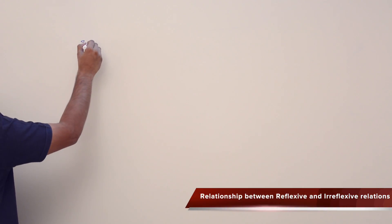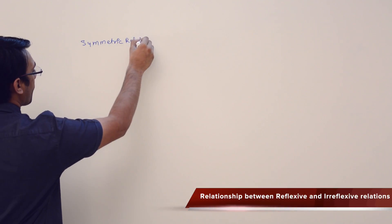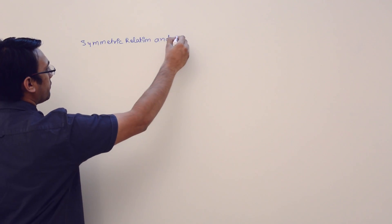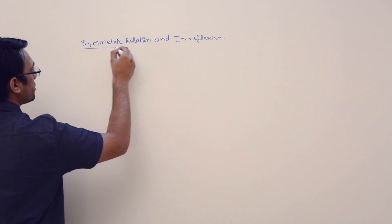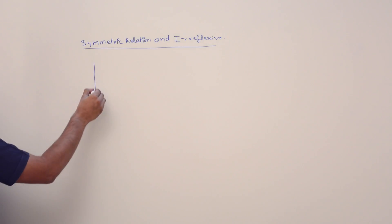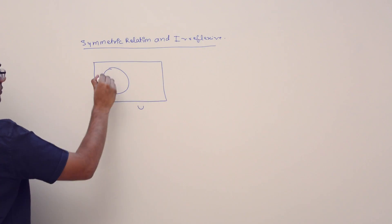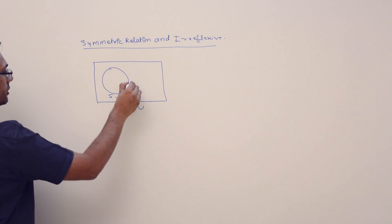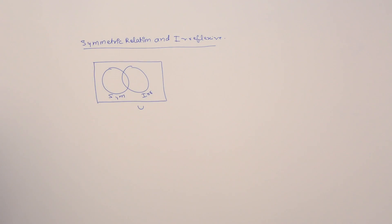Now let us look at the relationship between symmetric relations and irreflexive relations. Using this Venn diagram, we have a universal set, a set of relations which are symmetric, a set of relations which are irreflexive, and their intersection — symmetric and irreflexive. Now how can I draw this Venn diagram? If I can give an example of each of these regions, then I can simply describe it.